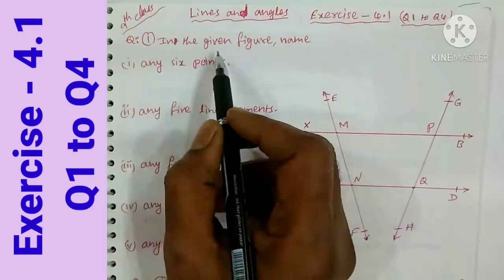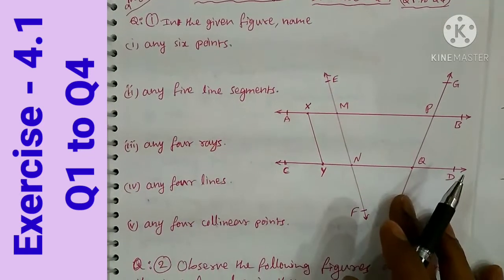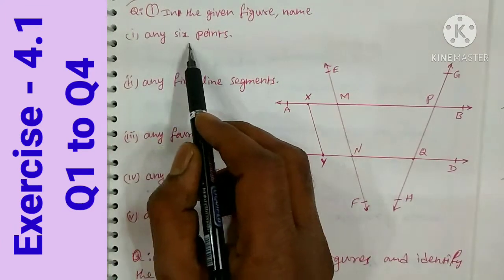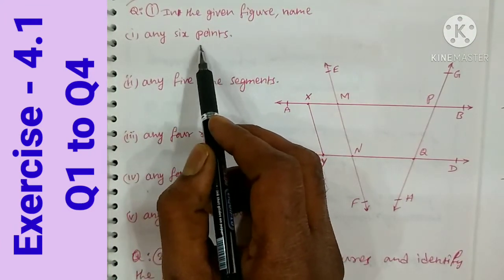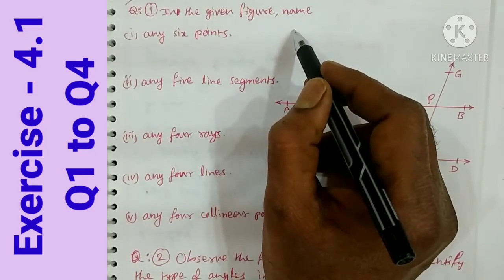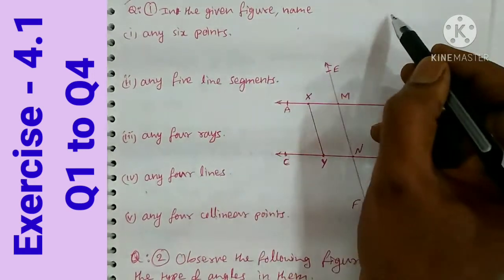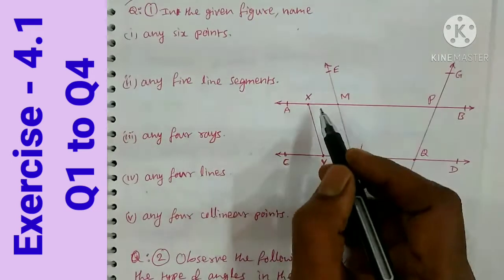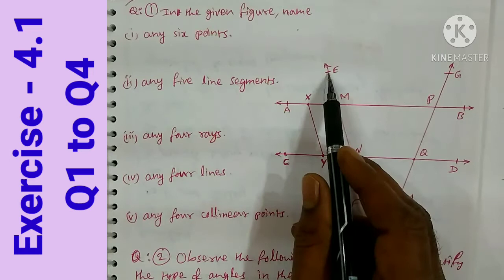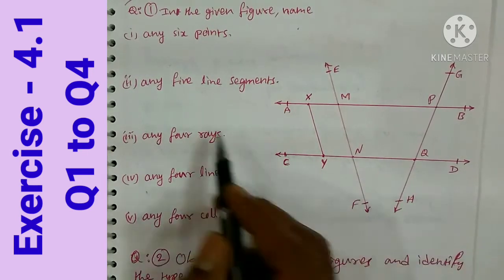The first question is: in the given figure, name the points. I will look at this diagram and answer. Here we have any six points — point is where two lines intersect, or where lines join. So we will choose: A, X, M, E, P, G, B — these are the points. This is the answer.